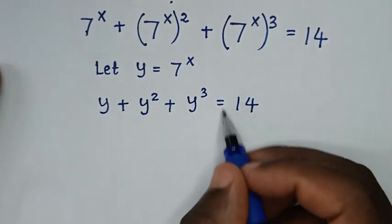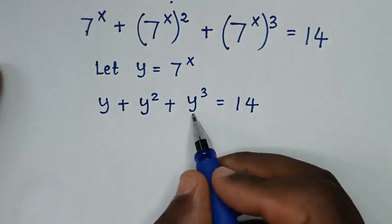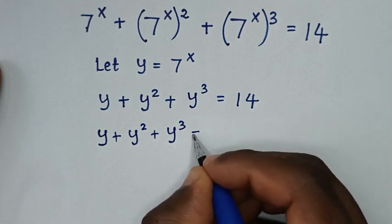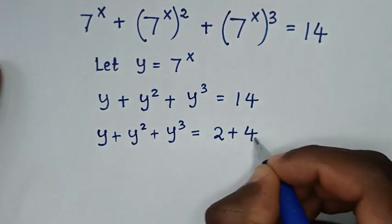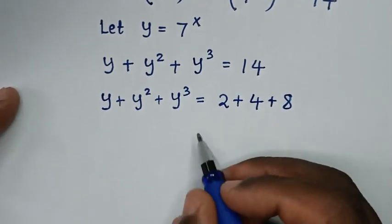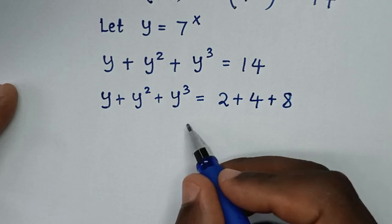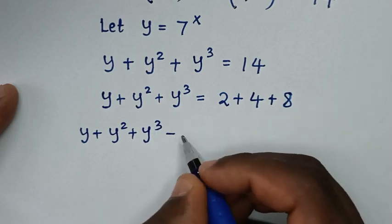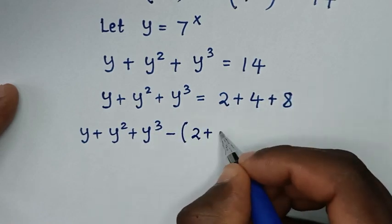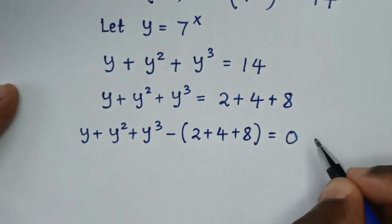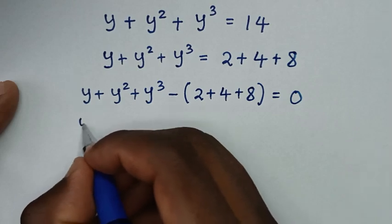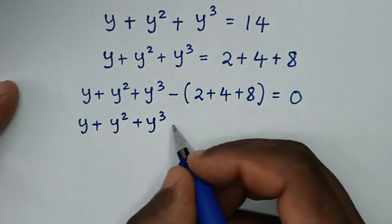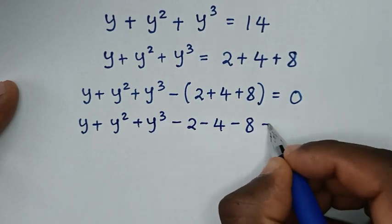We split 14 as 2 plus 4 plus 8, so y plus y square plus y power 3 equals 2 plus 4 plus 8. We move everything to the left side: y plus y square plus y power 3 minus bracket 2 plus 4 plus 8 bracket equals 0. Opening the bracket: y plus y square plus y power 3 minus 2 minus 4 minus 8 equals 0.